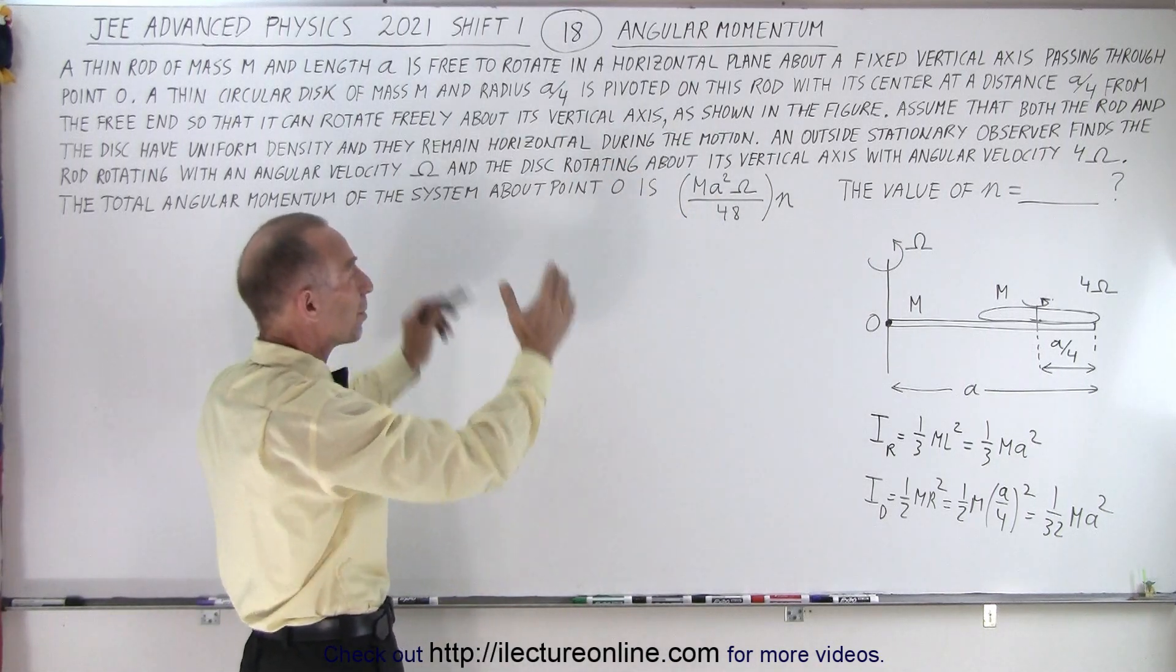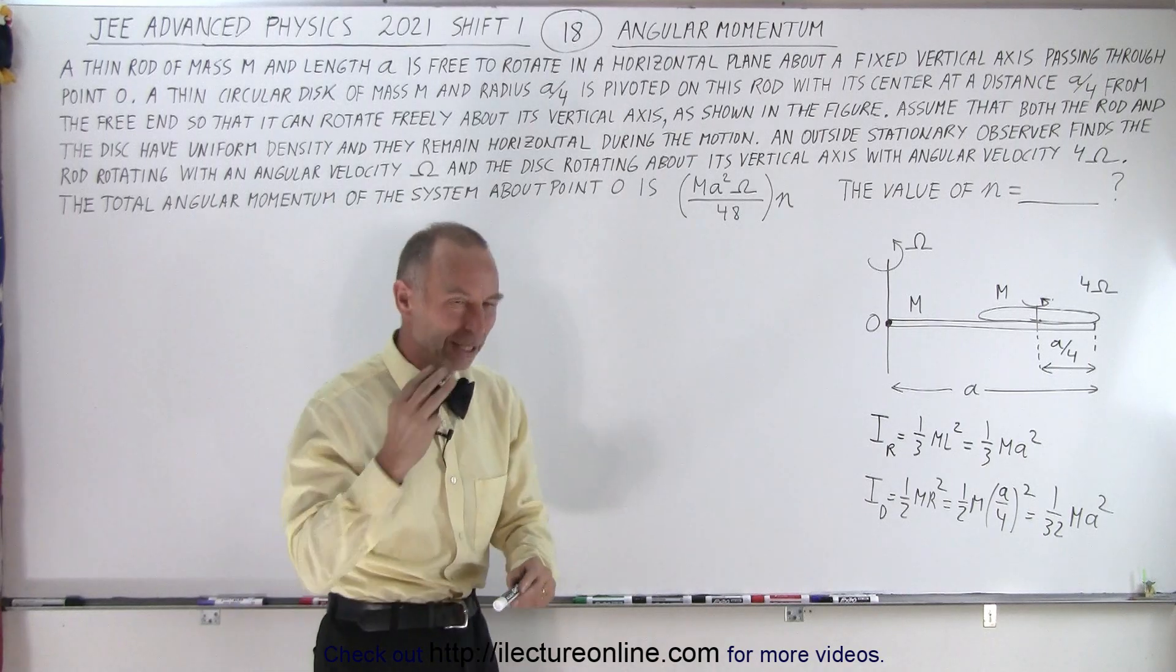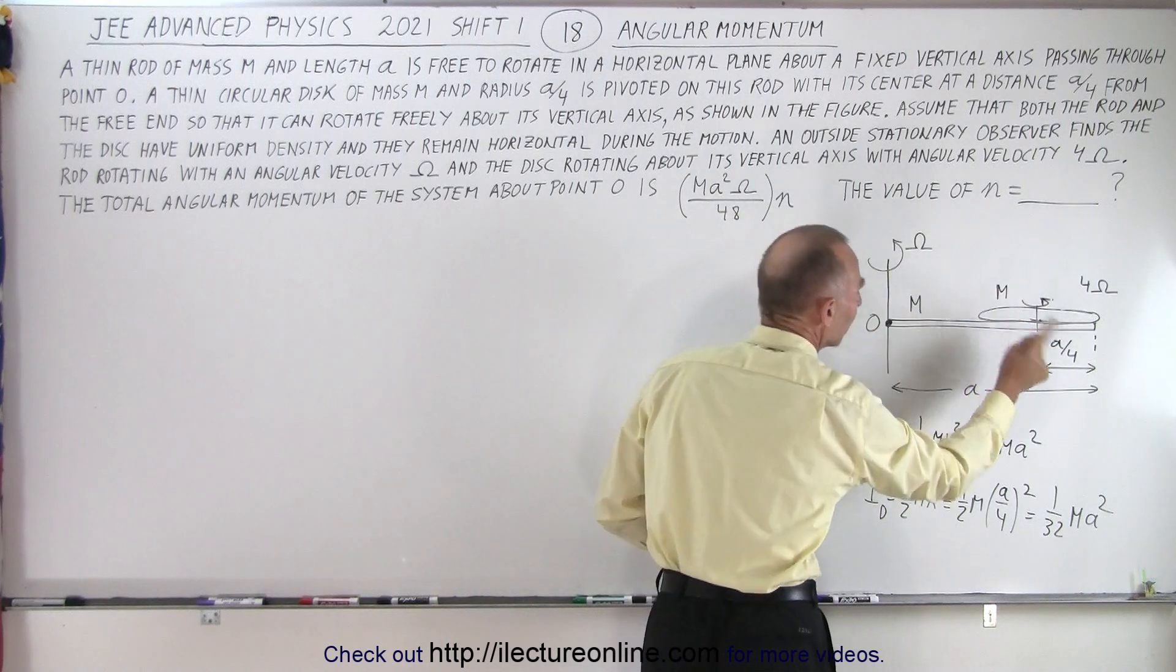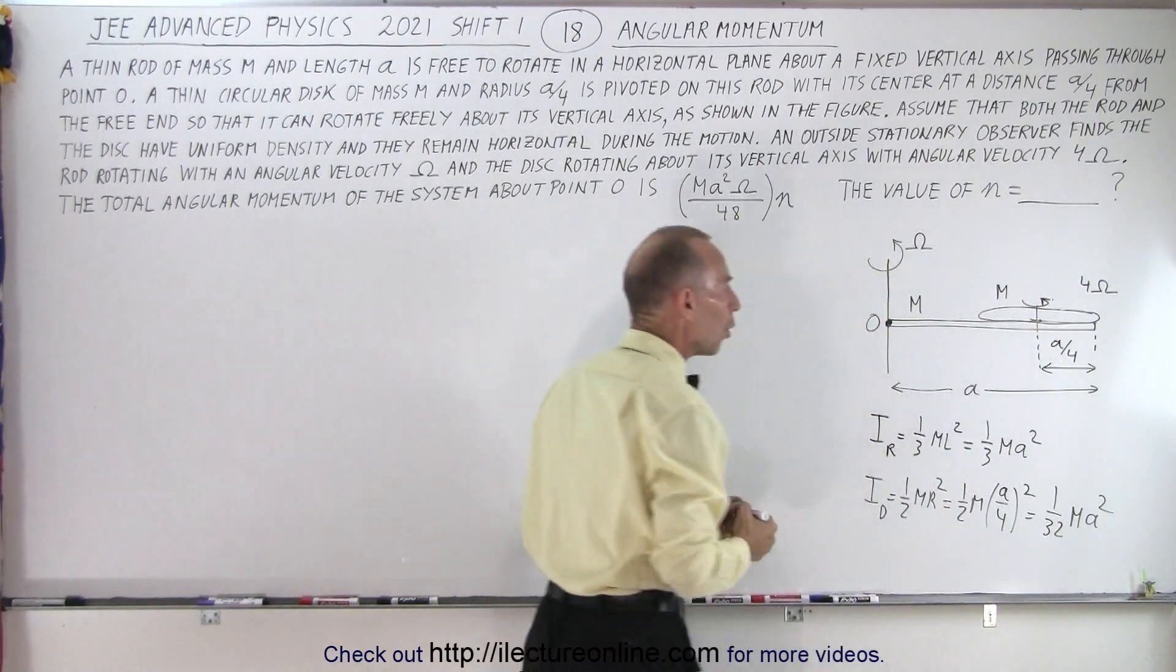We're trying to find the total angular momentum of the system. There's three components. We have the rod, the disk going around with the rod and then the disk rotating on its own axis.